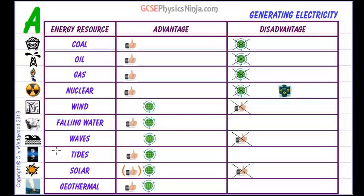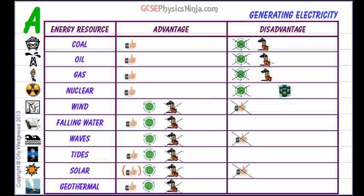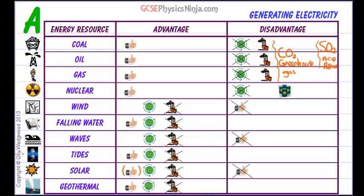Next up we have hazardous material. Nuclear power produces radioactive waste material, and that has to be stored carefully for many years — so that's a downside. Polluting gases: the fossil fuels produce polluting gases. In particular, all three produce carbon dioxide gas, which is a greenhouse gas. The first two produce sulfur dioxide, which is responsible for acid rain. However, the renewables do not produce polluting gases, so that's a good plus point.